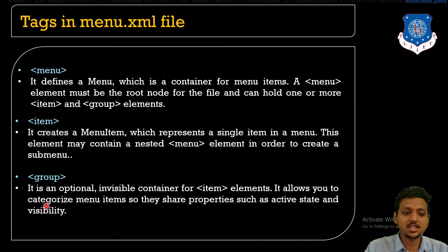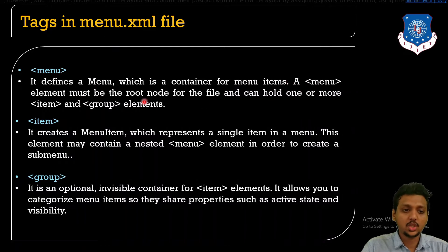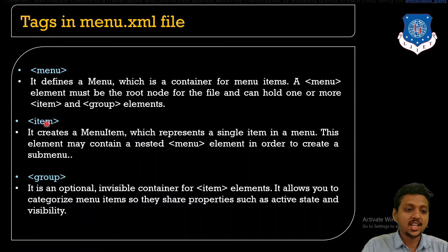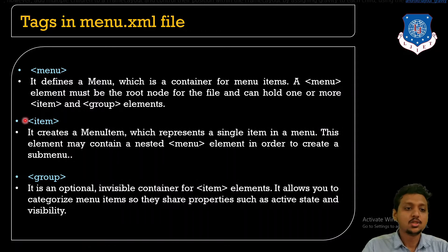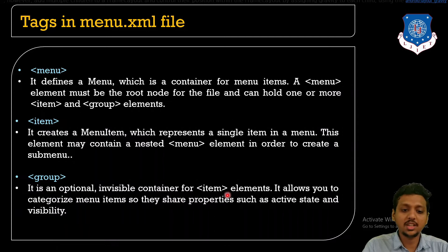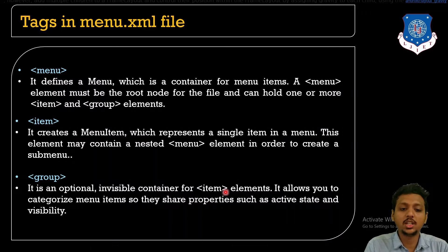The menu tag defines the container of the menu items and must be the root node. It can hold one item or a group of items. The item tag represents individual menu items — for example, the WhatsApp options like Web WhatsApp, Chat History, or Privacy are menu items. The group tag is an invisible container for items — when three or four items are combined together, they are represented as a group.